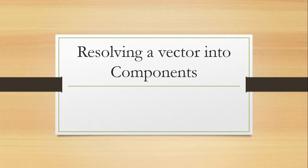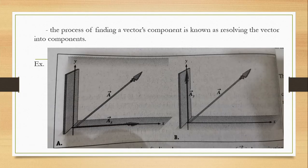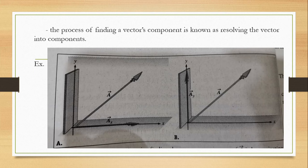I hope you can already differentiate the two quantities. The process of finding a vector's component is known as resolving a vector into components. For example, you have in the figure A and B. The vector is A and its components are along the x and y axis. As you can see on figure A, the component of vector A along the x axis is named Ax.